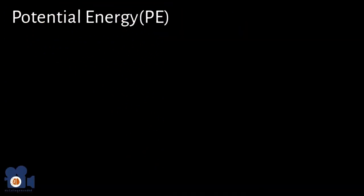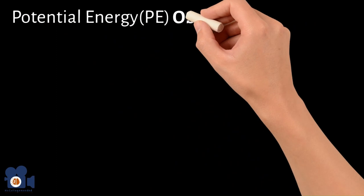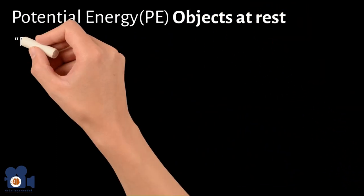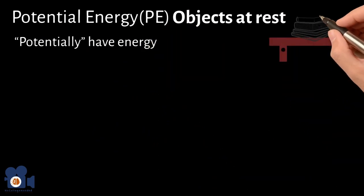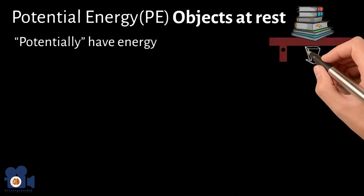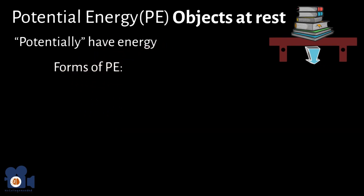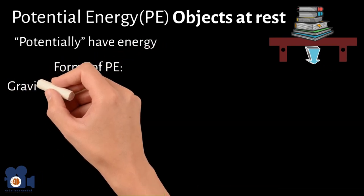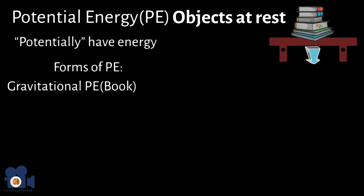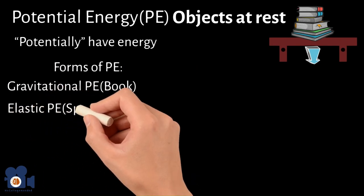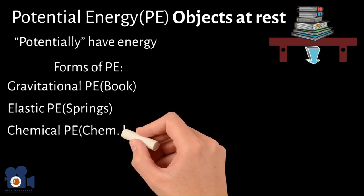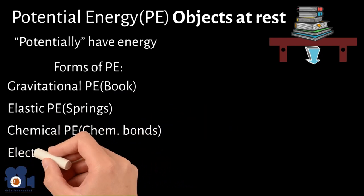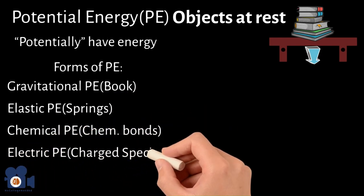Potential energy is almost the opposite of kinetic energy, as it pertains to objects at rest. The best way to think of it is that these objects potentially have energy — such as a book on a shelf. If that shelf breaks, that book comes down with energy. There are multiple forms of potential energy: gravitational potential energy (the book example), elastic potential energy (energy associated with springs), chemical potential energy (energy in chemical bonds), and electric potential energy (energy from charged particles).